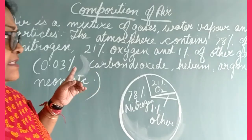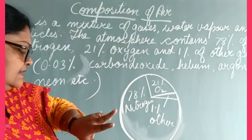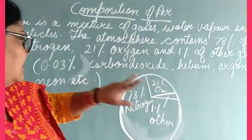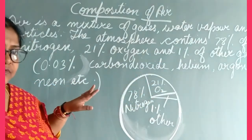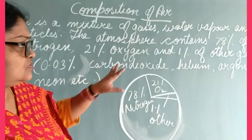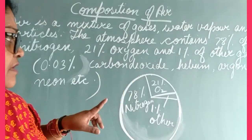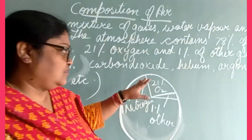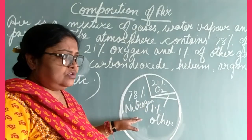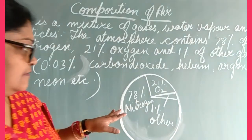What comes in other gases? Carbon dioxide, helium, argon, neon. When you add this 0.03% it will become 1% other gases. So with this diagram, it is clear to you all about the composition of the atmosphere.